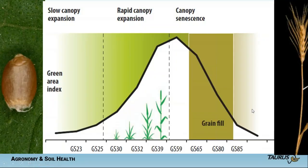I'll also talk about managing protein in your wheat crop under various environmental conditions. If you're expecting a protein supplement on your wheat pricing, you want to be at least 13.5% or more — you can make quite a bit of money on protein in some years. We'll talk about proper timing for upping the protein content. As usual, we start with how a plant grows, taking you from the wheat seed right through to harvest.